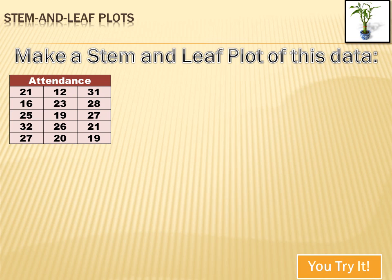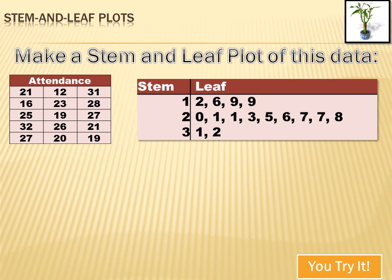Alright, we're going to make a stem and leaf plot for this data. I didn't put it in order — I hope you did that yourself. In the tens, I've got four data points: 12, 16, 19, and another 19. In the 20s, I've got nine data points: 20, 21, another 21, a 23, and so forth. Now I've got a stem and leaf plot. What do I do with it? Well, that's your next challenge — hit pause and answer these questions.